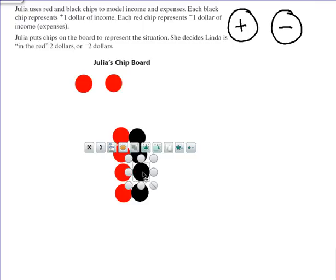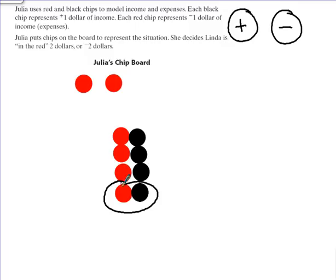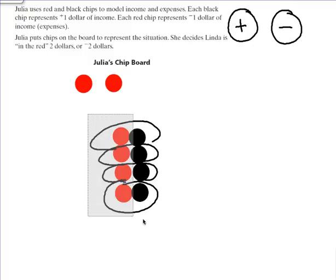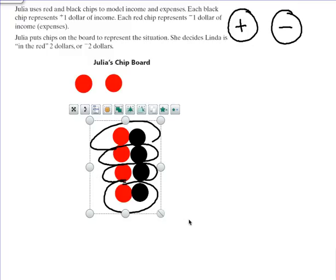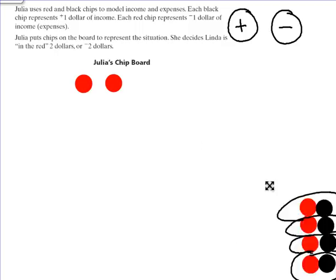Now I put them a little bit close together, but you can see that we've created four—there's one, two, three, four sets of zero pairs—the value of which is zero. And so we can remove the zero pairs from our chip model and it's not going to affect our value.